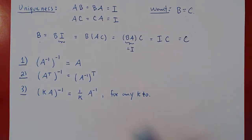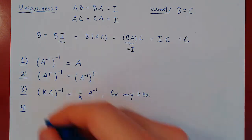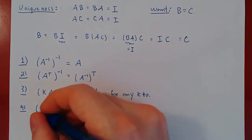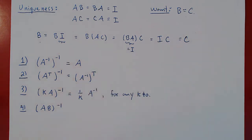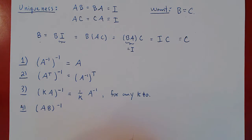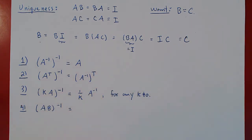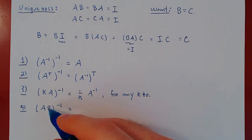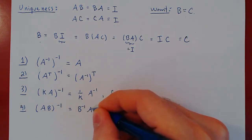Next property — this one is a bit more interesting. What if you have two invertible matrices A and B and ask: is the product invertible? The answer is yes. If A and B are both invertible, A times B is invertible, and the inverse happens to be the inverse of each matrix, but with the order changed — not A inverse times B inverse, but instead B inverse times A inverse.